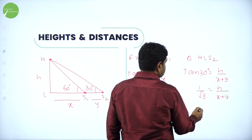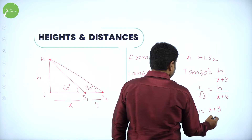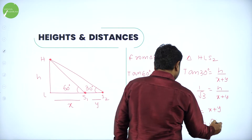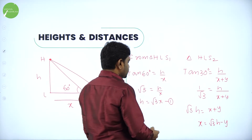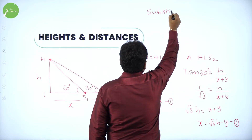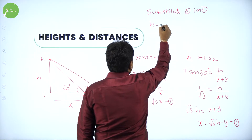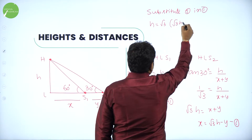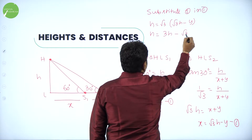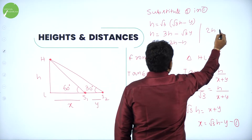Rearranging, H equals (x plus y) over root 3, or x plus y equals H root 3. So x equals root 3 H minus y. Call this equation 2. Substituting equation 2 into equation 1: H equals root 3 times x, and x equals root 3H minus y, so H equals root 3 times (root 3H minus y).